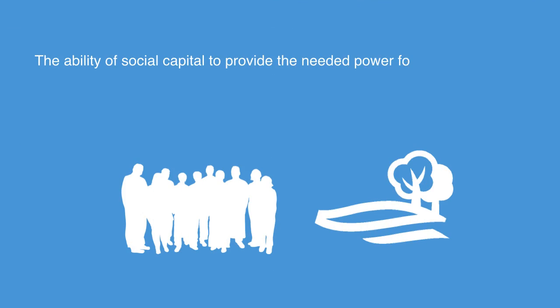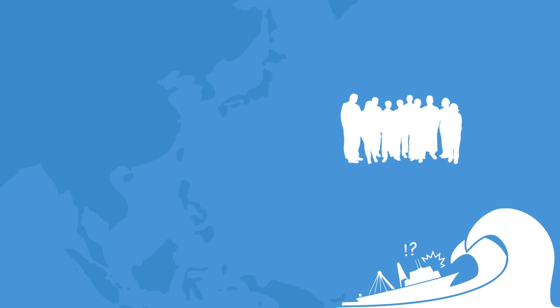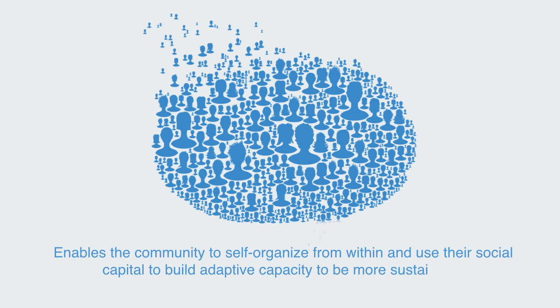The published literature contains many examples demonstrating not only the ability of social capital to provide the needed power for the management of community commons — property or resources such as water, pasture, and forestry — but also to build an adaptive capacity to better tolerate climate variability, hazards, and extreme events. Case studies of sea defense management in Vietnam during the 1990s have shown how in times of crisis, dormant social capital was rapidly awakened by the community themselves and played an important part in dealing with change. Social capital enables communities to self-organize from within, building adaptive capacity to be more effective, resilient, and ultimately sustainable.